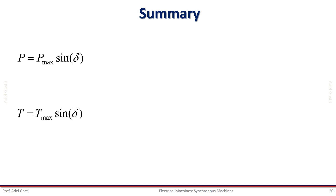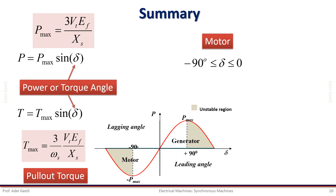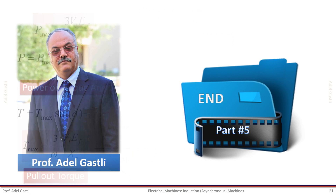In summary, we have seen that the power and torque equations can be expressed as a function of the power angle delta. The maximum torque is called the pull-out torque because the machine cannot deliver more than that torque, and if the required torque is higher the rotor will pull out of synchronism. For motor operation, delta is negative and varies within the steady-state stable interval from minus 90 degrees to zero. For generator operation, delta is positive and its steady-state stable operation interval is from zero to 90 degrees. This is the end of this part. Thank you for watching.